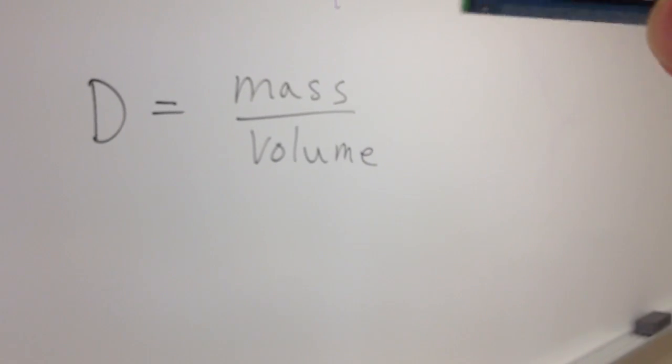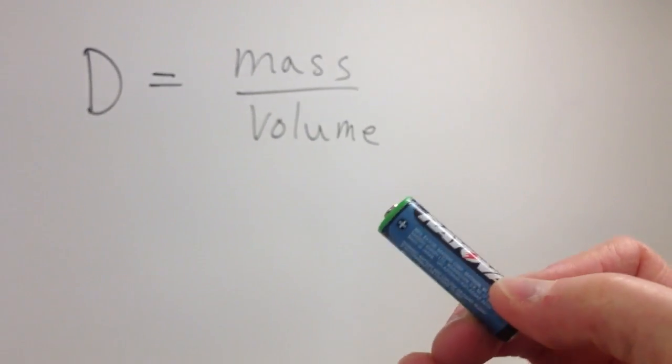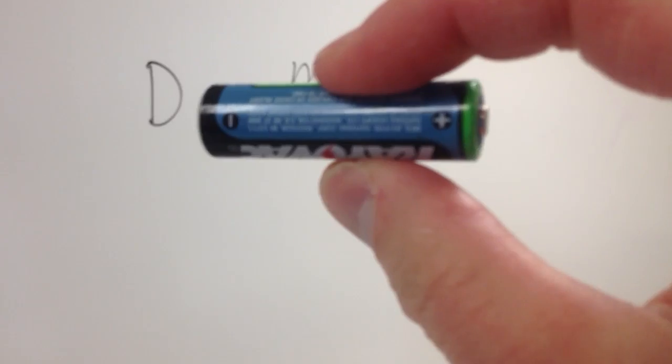What I have here is an irregular shaped object, a battery. First thing I have to do is determine the mass, so I'm going to come over here and use my balance to determine its mass.